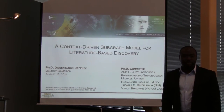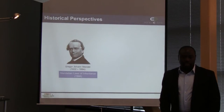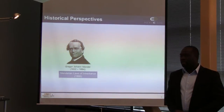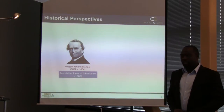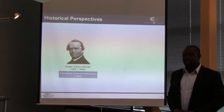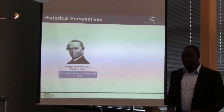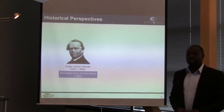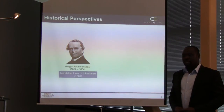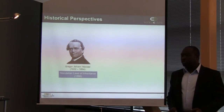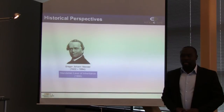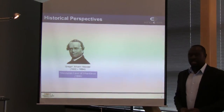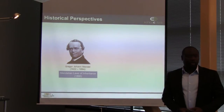Today I'll talk about the context-driven subgraph model for literature-based discovery. In 1866, Austrian scientist Johan Mendel explored the research question of the inheritance of traits in peas. He conducted over 10,000 experiments and observed that inheritance of traits extended beyond immediate parents across several generations. He explained this as resulting from random selection of dominant and recessive factors, putting forth what is known as the Mendelian laws of inheritance.